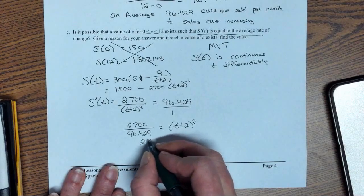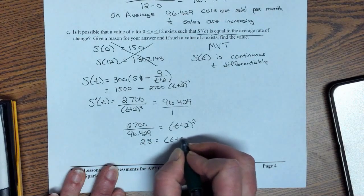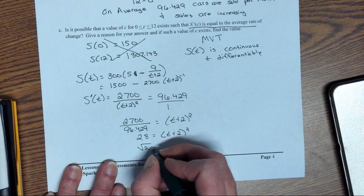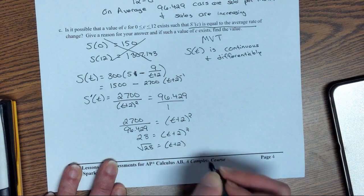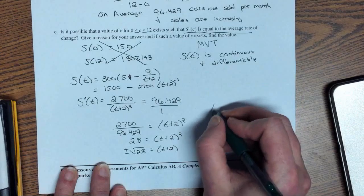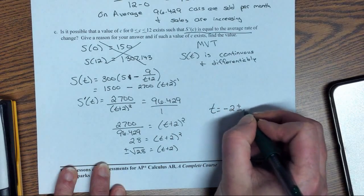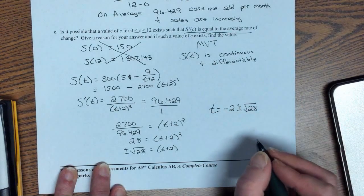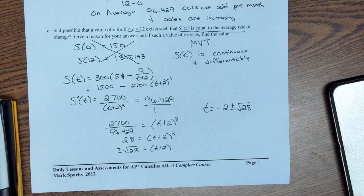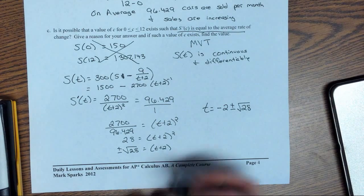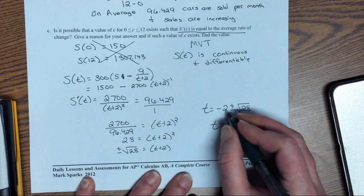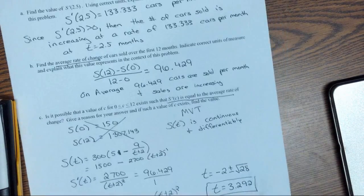So if I cross multiply, I end up getting 2700 divided by 96.429 equals (t + 2)^2. That gives 28. So I can actually solve this one. Square root both sides. Subtract 2. Oops, I forgot my plus or minus. So I need to figure out which one is going to be in that interval, that would be the plus. 3.252. So c = -2 + √28.